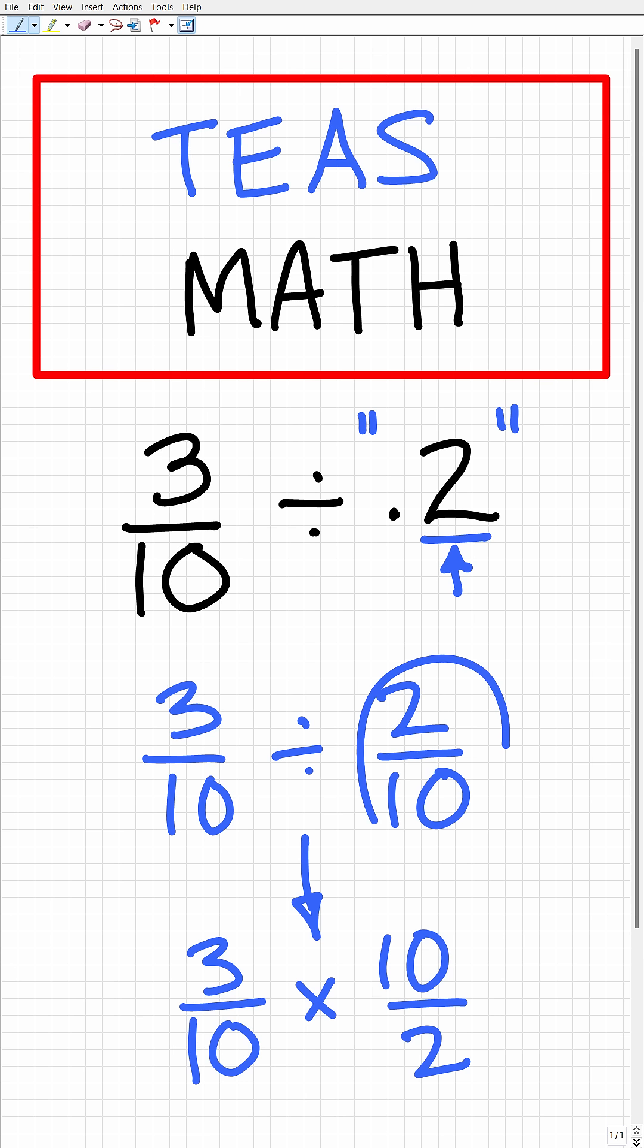All right, so what we're going to do is we're going to flip this fraction to the right of the division operator. And what we have now is a multiplication problem. So 3 tenths divided by 2 tenths is equivalent to the problem 3 tenths times 10 over 2. Again, we're going to flip this fraction to the right of the division operator.